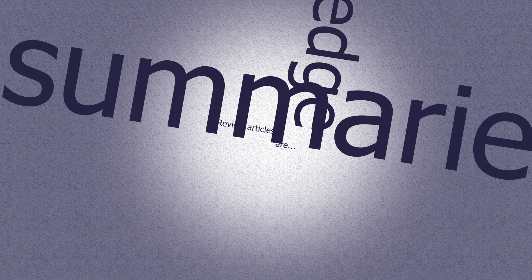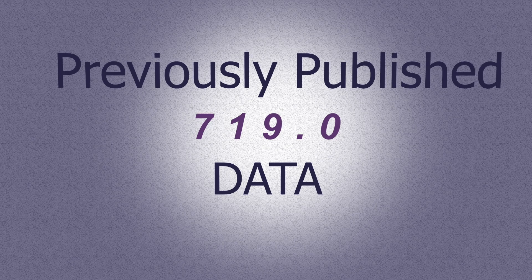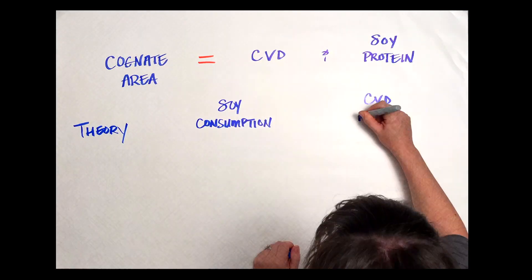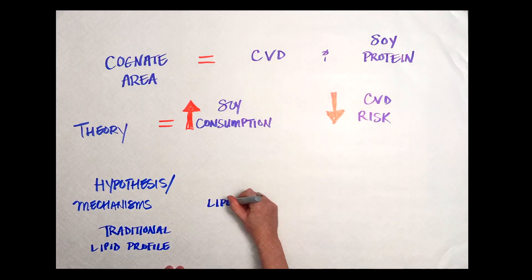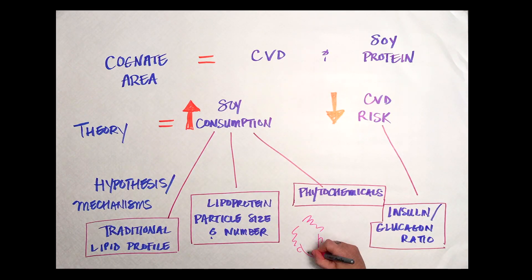Review articles are basically summaries of the current knowledge in a particular area of research, based on the data already published in the literature. These are great to begin your journey in a specific cognate area and if you are interested in understanding how all the pieces of the puzzle fit together to form an overall scientific theory.